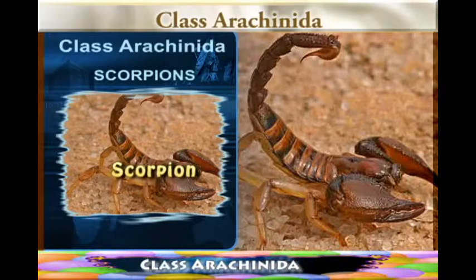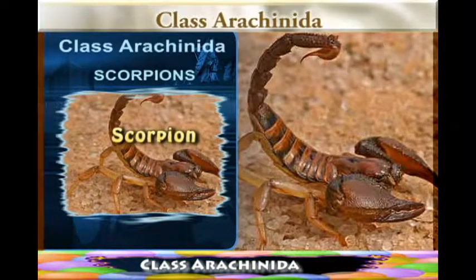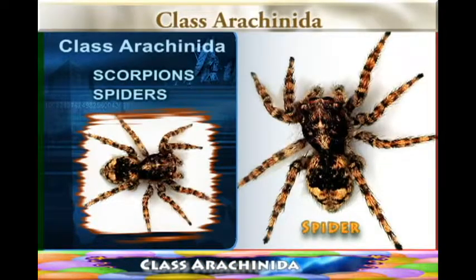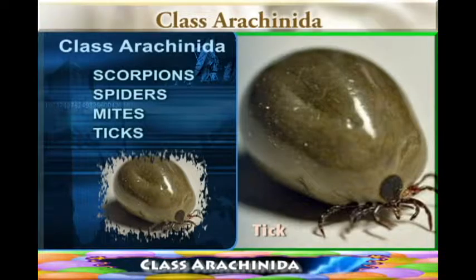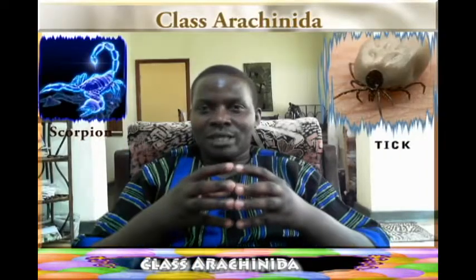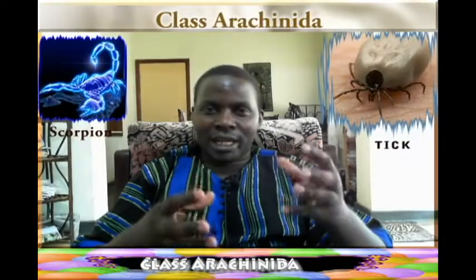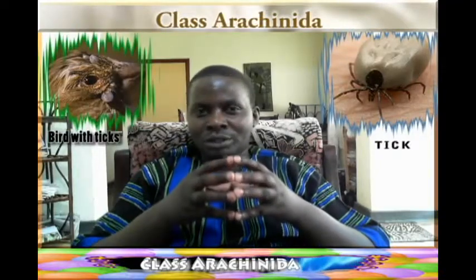Class Arachnida includes organisms like the scorpion, the spider, the mites, and the ticks. All these organisms have common characteristics, and despite being different, there are features that bring them together. Those are the characteristics we want to discuss in this session.